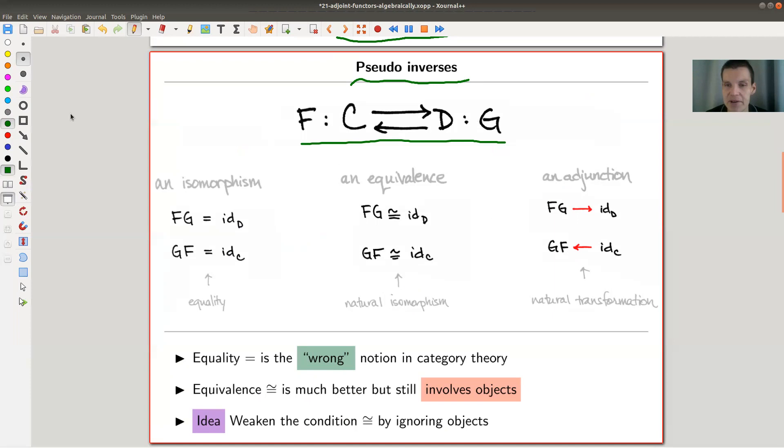Well, there could be equivalences or isomorphisms, where I would write down an equality sign, so FG is identity, GF is identity.